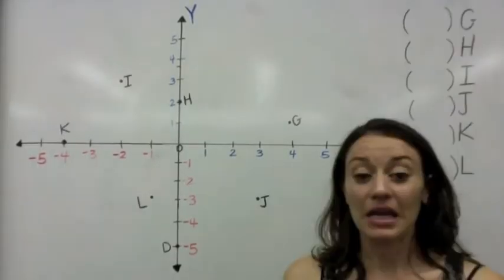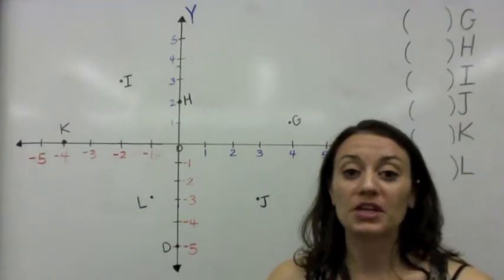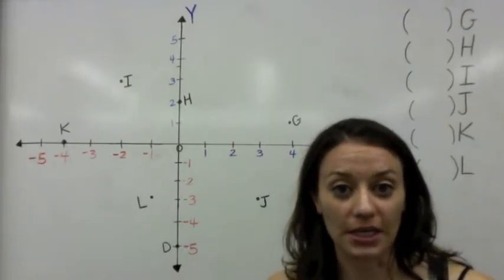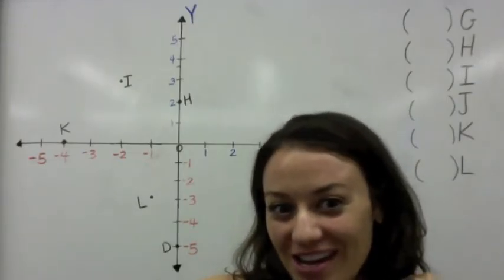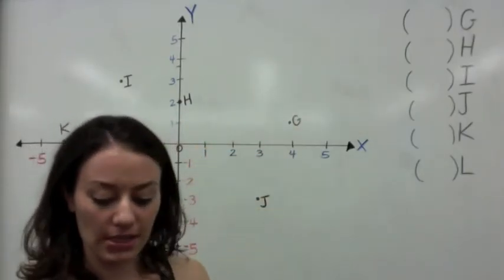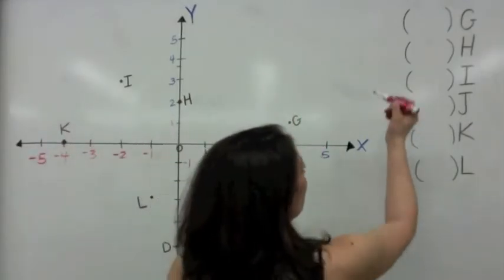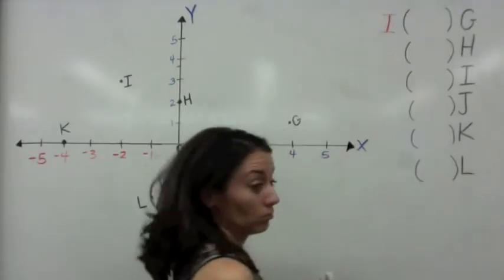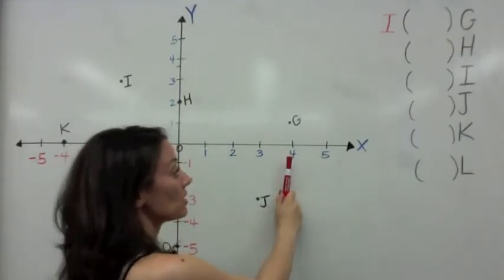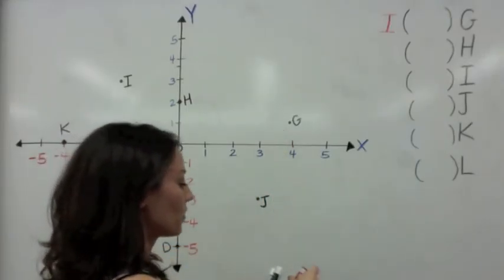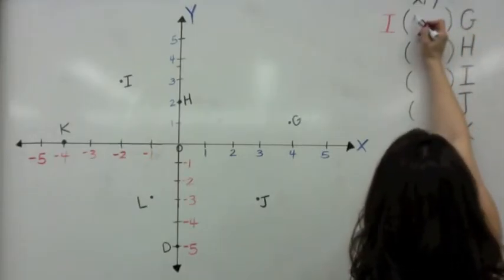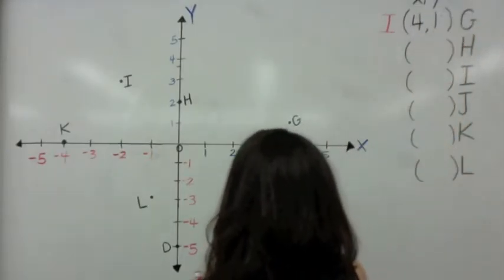Now for our last set of examples, we're going to go in reverse order: I'll give you a coordinate point and you tell me where it is and what quadrant it's in. Let's start with G. It's easiest to tell me the quadrant first. G is in quadrant 1. So we should get two positive values. We start at the x-axis at 4, and it went up 1. So the ordered pair is (4, 1) — both positive, that's why it's in quadrant 1.